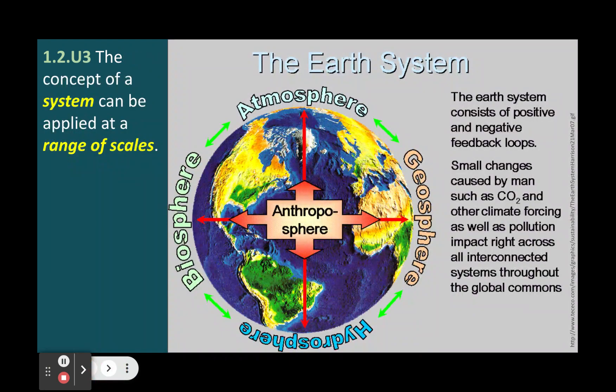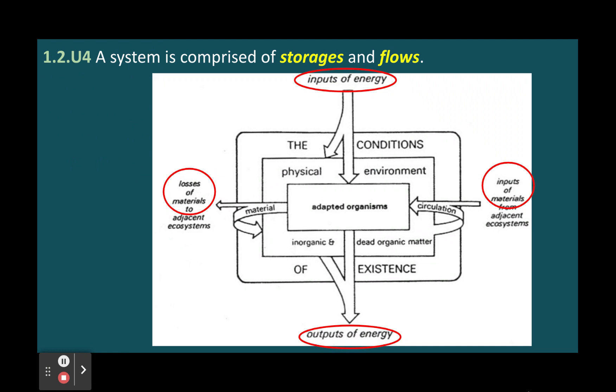A system is comprised of storages and flows. Storages are places where matter or energy is accumulated or stored within the system. Flows are movements or transfer of matter or energy into or out of the system. The flows provide inputs and outputs of energy and matter for the system.